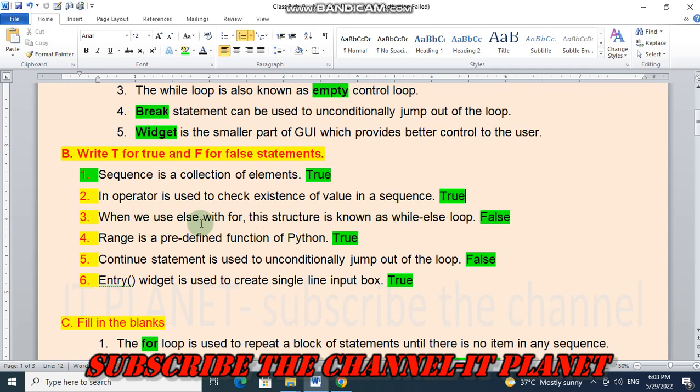Second statement, when we use else with for, this structure is known as while else loop. So this is a false statement. Range is a predefined function of Python. This is a true statement. Continue statement is used to unconditionally jump out of the loop, and this statement is false. Entry widget is used to create single line input box, and this statement is true.